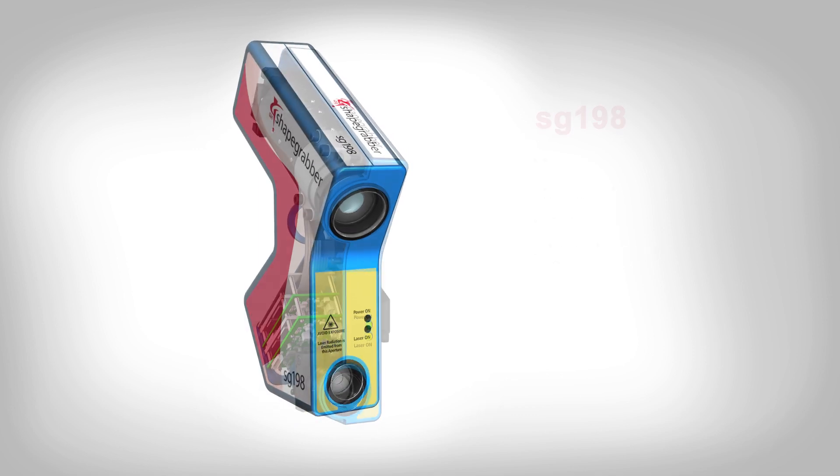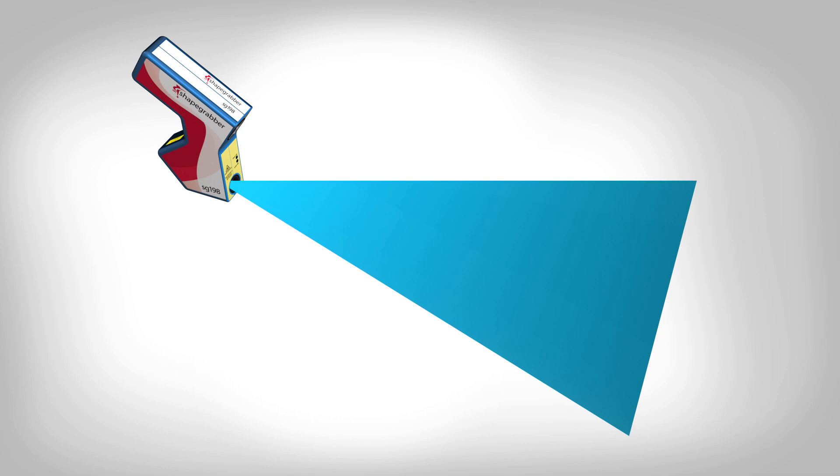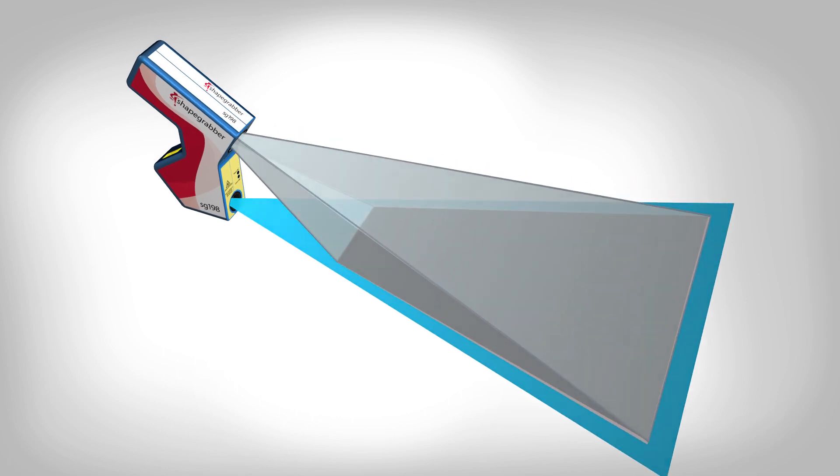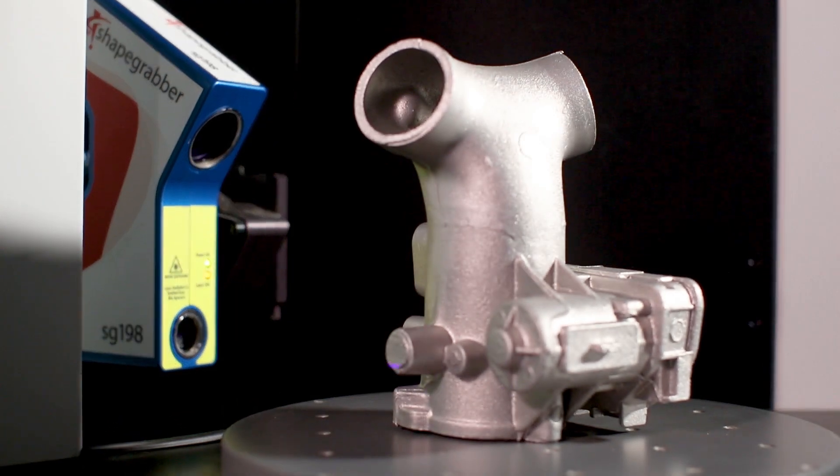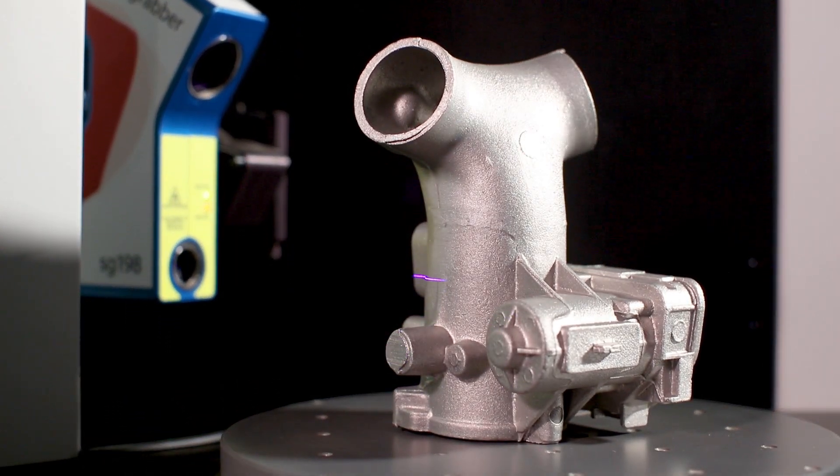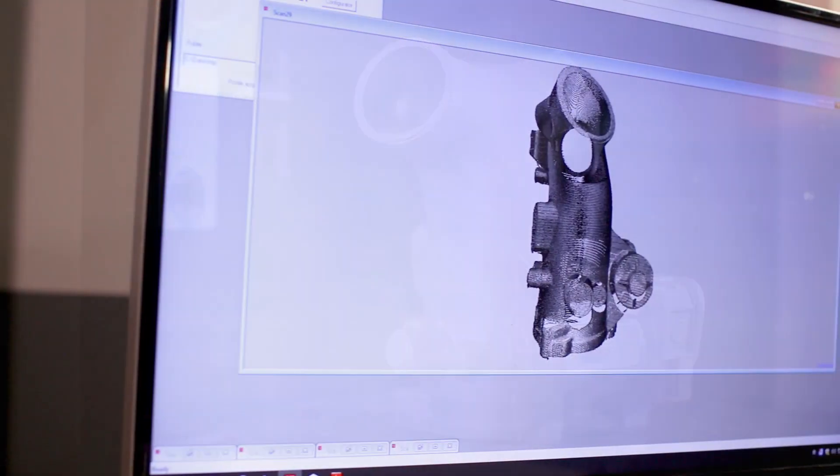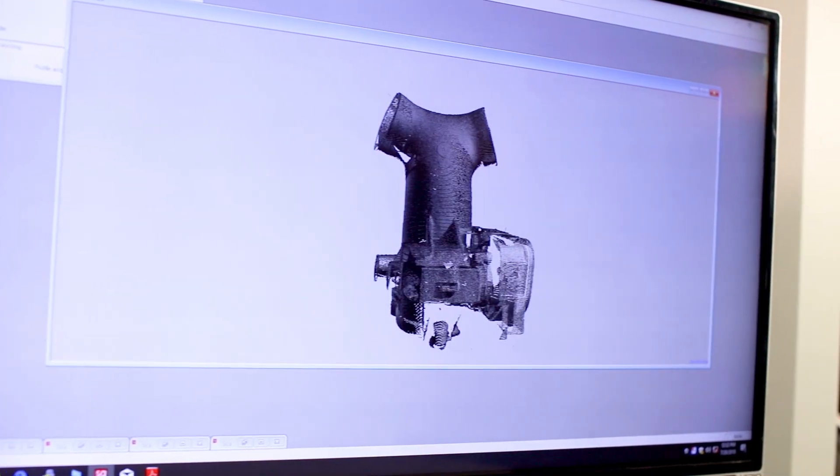The SG198 relies on QVI's over 70 years of experience designing optical systems for precision measurement. The proprietary blue light laser projector generates a thin, straight and uniform line resulting in extremely low noise data for accurate measurement and analysis.